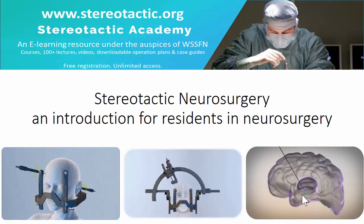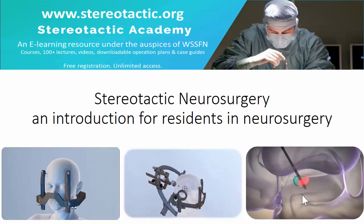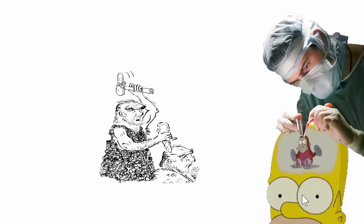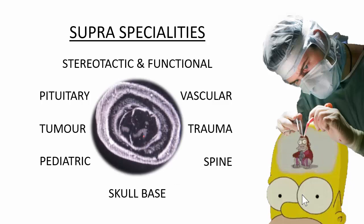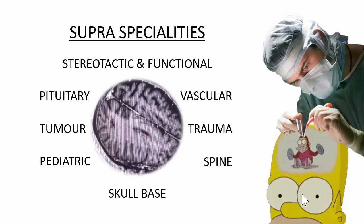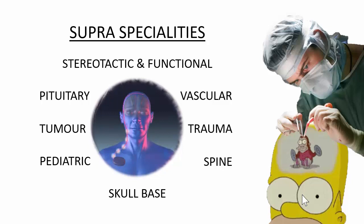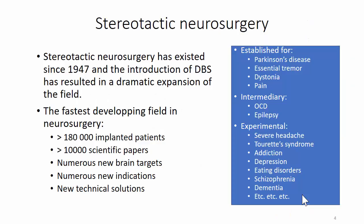Dear colleague, welcome to this course on stereotactic neurosurgery: an introduction for residents in neurosurgery. The human brain is a complex machine, and the field of neurosurgery has over time developed from a number of basic techniques towards more and more refined procedures, dividing our specialty into a number of distinct sub-specialties, or more correctly, supra-specialties. As a resident in neurosurgery, you are expected to master the basics but also to familiarize yourself with the different supra-specialties. Stereotactic neurosurgery encompasses basic skills every resident should know, such as frame-based stereotactic biopsies, but also functional procedures such as deep brain stimulation and psychiatric procedures, of which the typical resident cannot be expected to have more than a basic understanding.